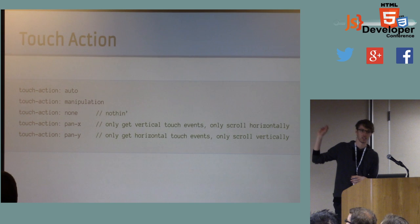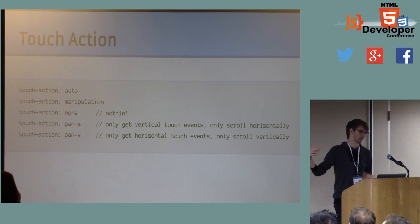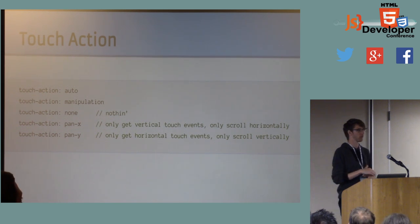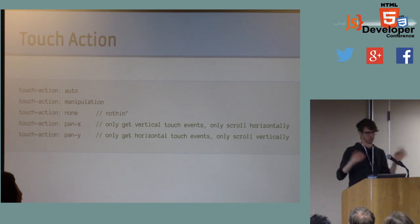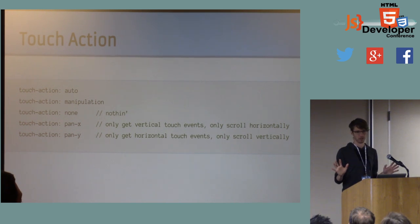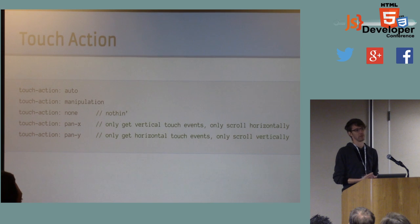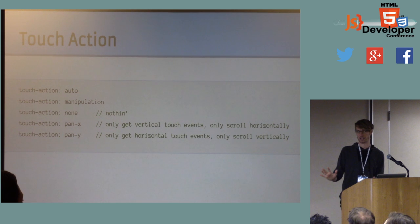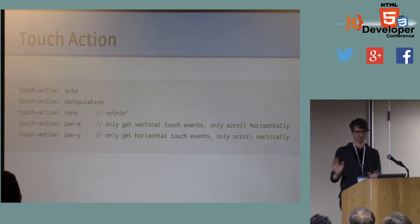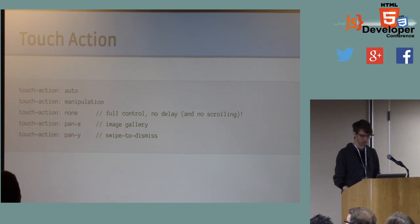This provides really nice disambiguation for the browser because it knows it can immediately send you a touch event — it doesn't need to worry about scrolling in the direction you're handling — and it can immediately scroll because it doesn't need to worry about JavaScript receiving the touch event in the scroll direction. Touch-action: none is even better still — in the case where you don't want scrolling at all and you'll do your own positioning, touch-action: none will just immediately give you the touch events. But keep in mind you don't get scrolling.